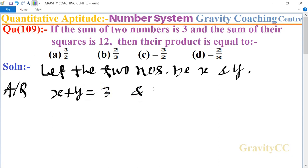And the sum of their squares: x square plus y square equals 12. So now we use the identity x square plus y square equals x plus y whole square minus 2xy, which equals 12.